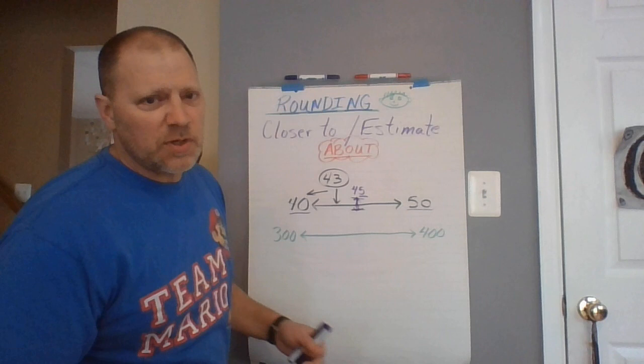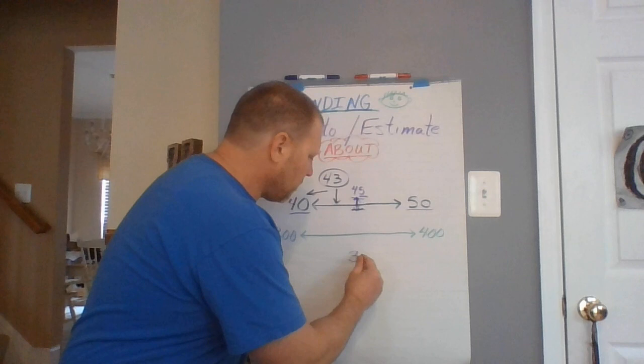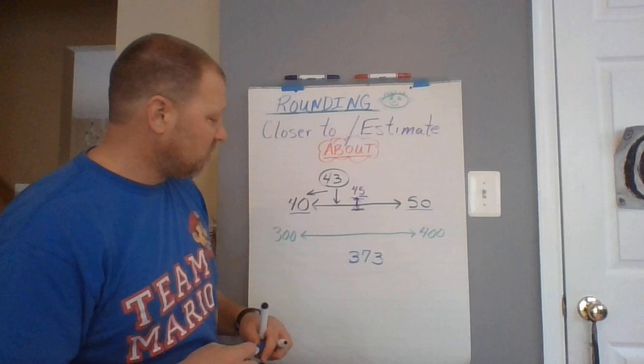So here we go. Now let's say I'm rounding to the nearest 100. Give me a number that is between 300 and 400, Pierce Spanagle. Oh, good one, Pierce. Pierce said, my friends, 373. Very good, Pierce. That is between 300 and 400.